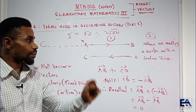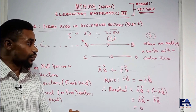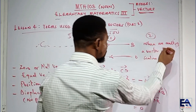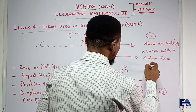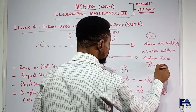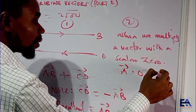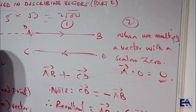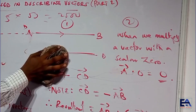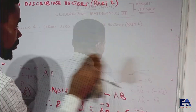So when you multiply a vector by a scalar zero — an ordinary number zero — the result will also be a zero vector. If you have vector A multiplied by scalar zero, the result is a zero vector. Those are the two conditions for obtaining a zero or null vector.